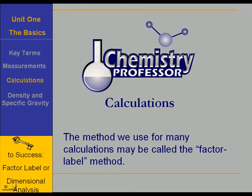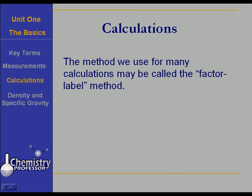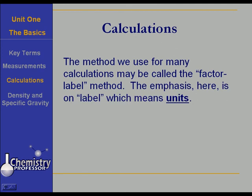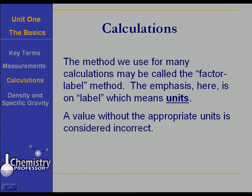Hopefully you're getting this early in your chemistry experience because it will help you in your calculations. The method we're using is called the factor-label. It keeps us from having to memorize so many formulas. The emphasis here is on label, and label means units. You must keep your units. A value without the appropriate units is very often considered to be incorrect.